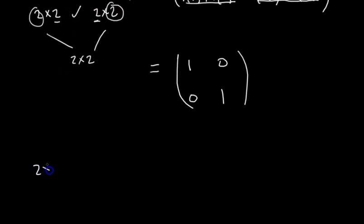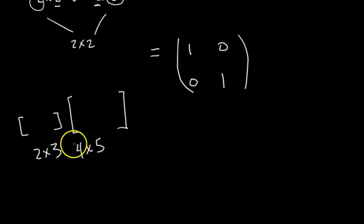Let's say you had a 2 by 3 matrix and you're multiplying it by a 4 by 5 matrix. Oh, this is a disaster. Is this defined? No, it's not because the inner dimensions are not the same. What if it was 2 by 3 by 3 by 5? Okay, then now the inner dimensions are the same.